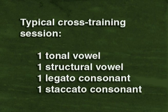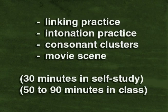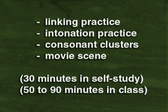A typical cross-training session might include one tonal vowel like E, one structural vowel like OW, one legato consonant like V, one staccato consonant like K, linking practice, intonation practice, consonant clusters, and a movie scene. This kind of session might take 30 minutes in self-study, or 50 to 90 minutes in a classroom setting.